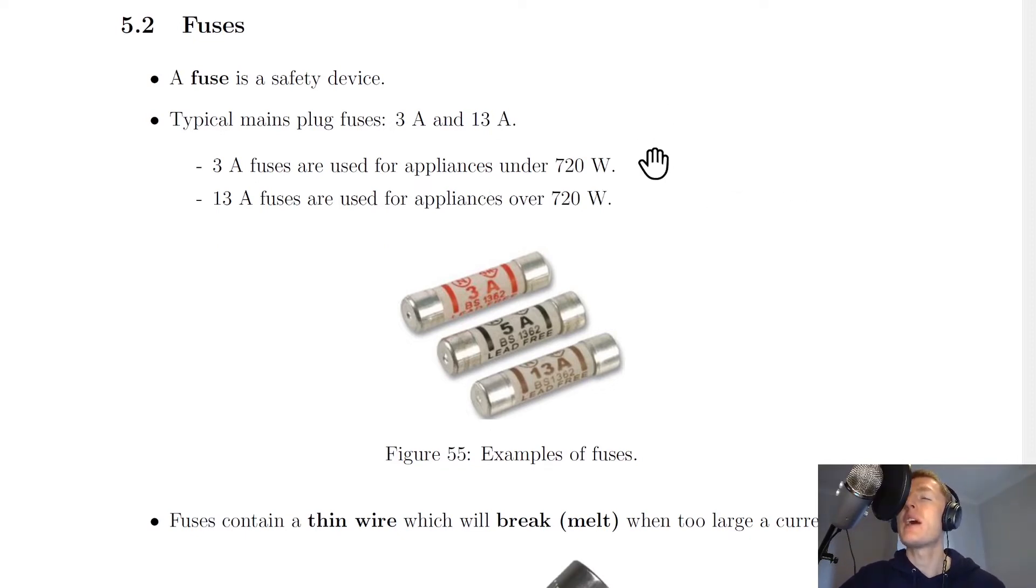If the appliance has a power rating less than 720 watts, then it's going to need a 3 amp fuse. However, if the appliance uses over 720 watts, then it's going to need a 13 amp fuse. So you need to remember this cutoff point: 720 watts. Anything below it will need a 3 amp fuse and anything above it will need a 13 amp fuse.